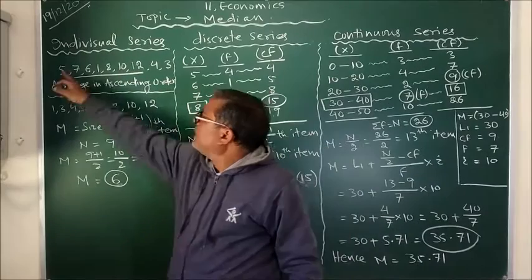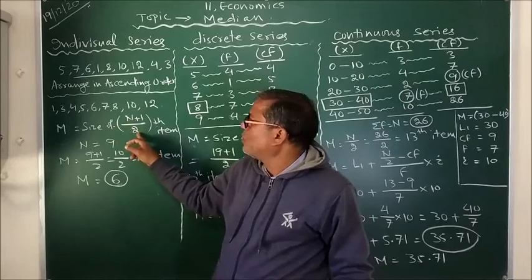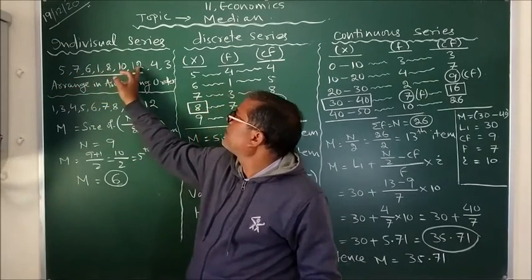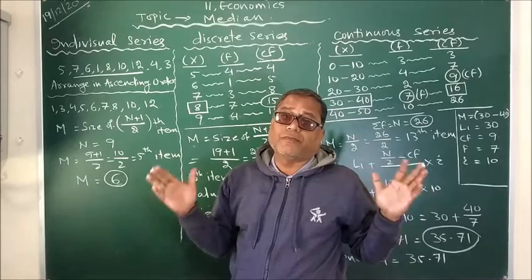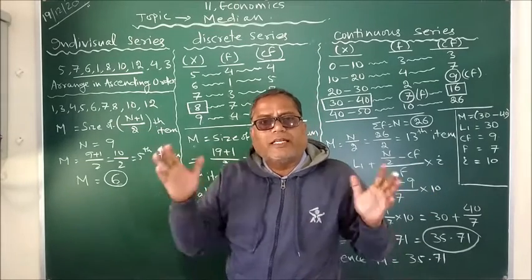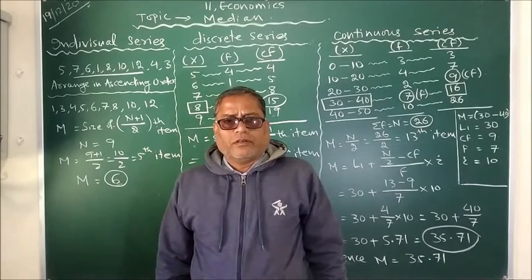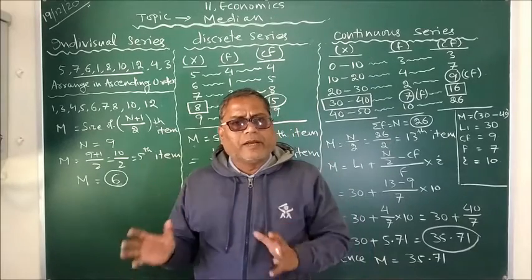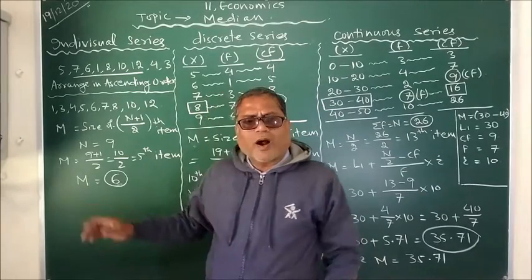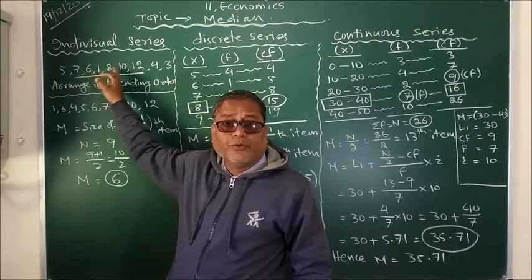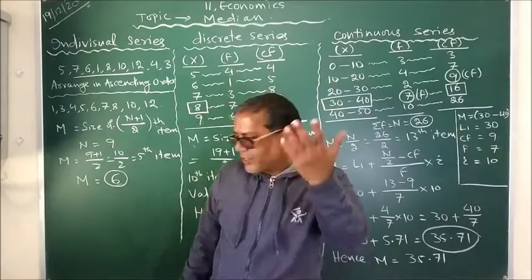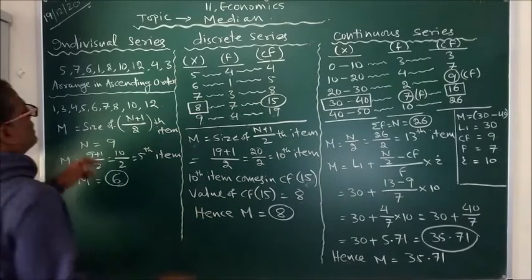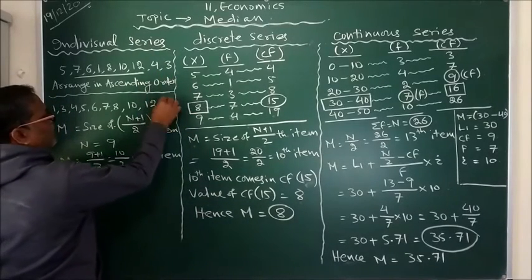One more thing I forgot. While taking N+1 upon 2, there might be two possibilities. Here we have 9 different observations or values in this series. Hence 9 is an odd number, and that is why an odd number plus 1 upon 2 gives us a definite whole number. But what if the number of values in the series is even? Let us see — if we add another value, that is 14, then N equals 10.